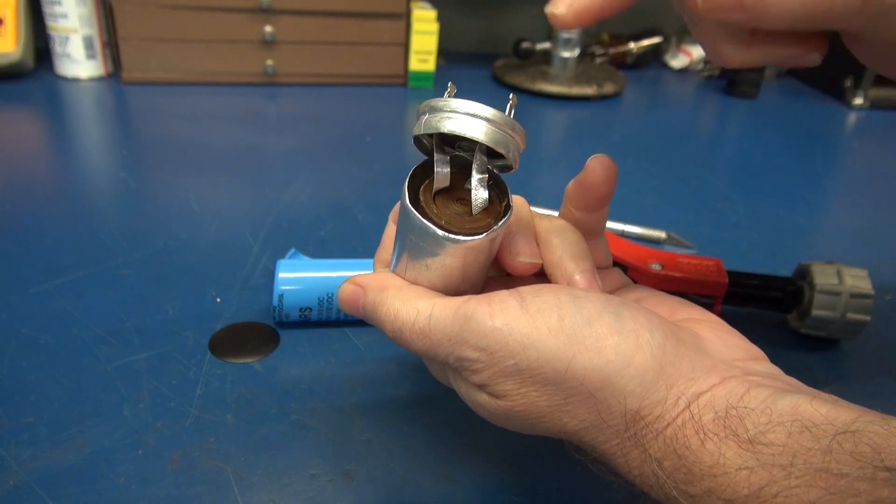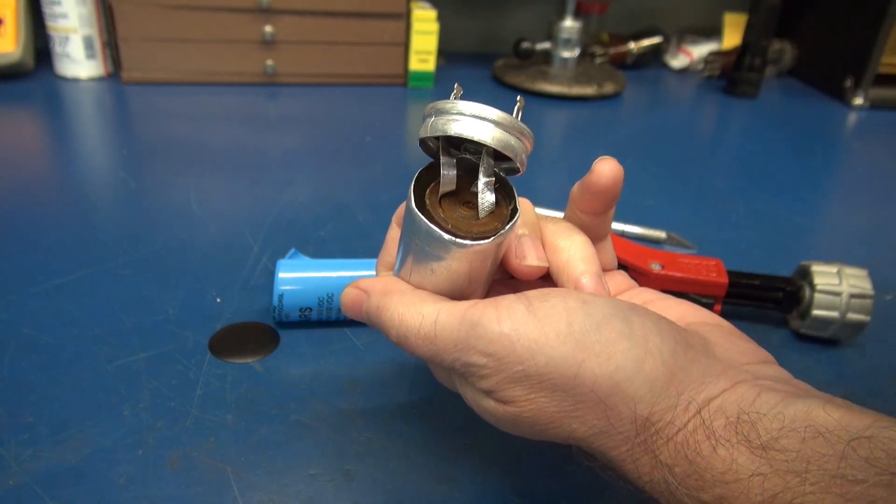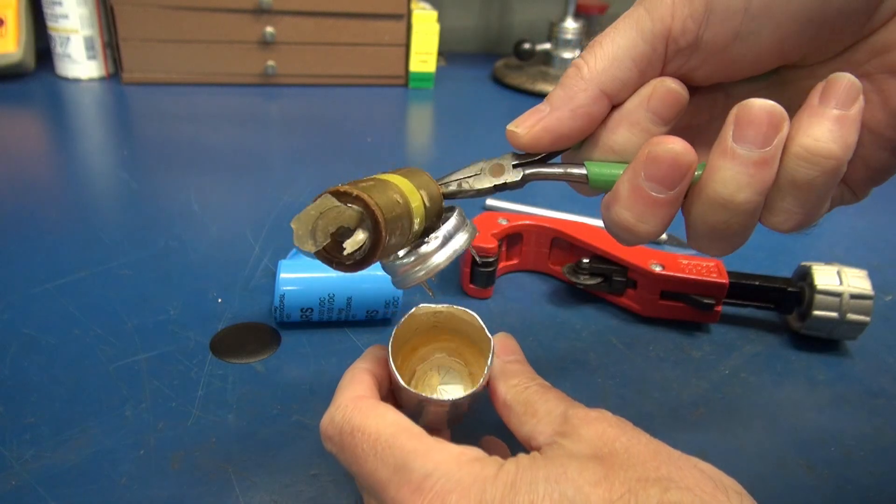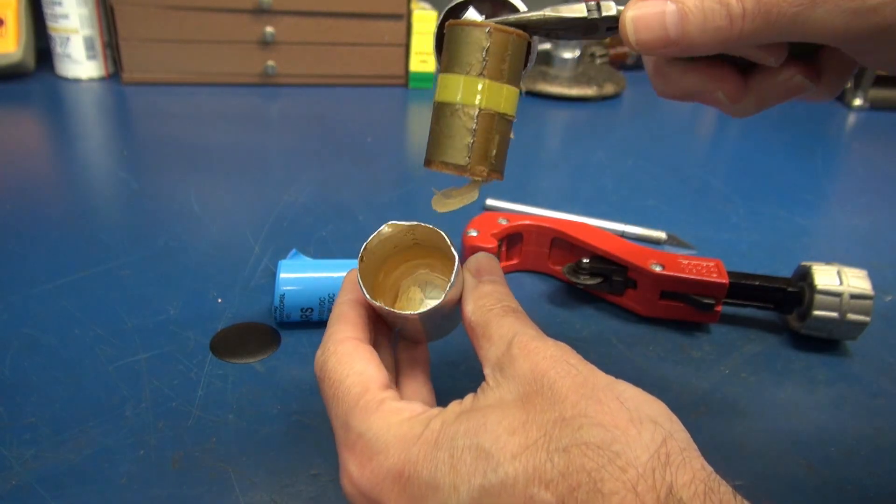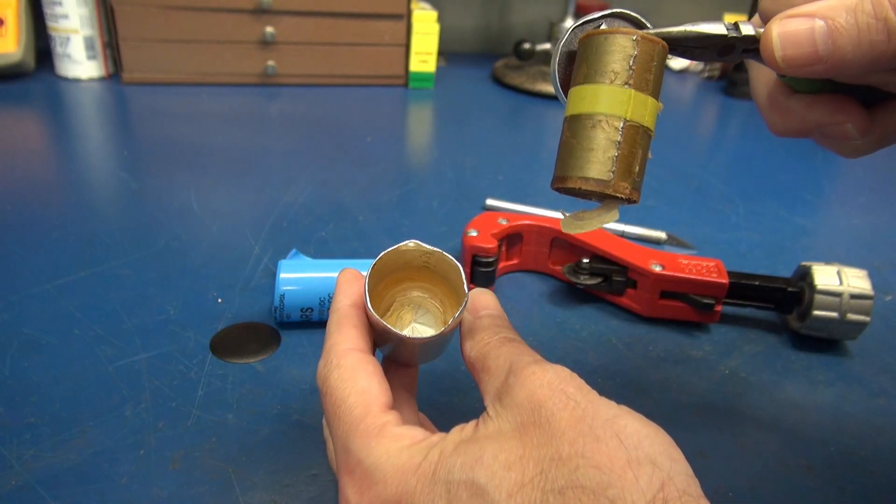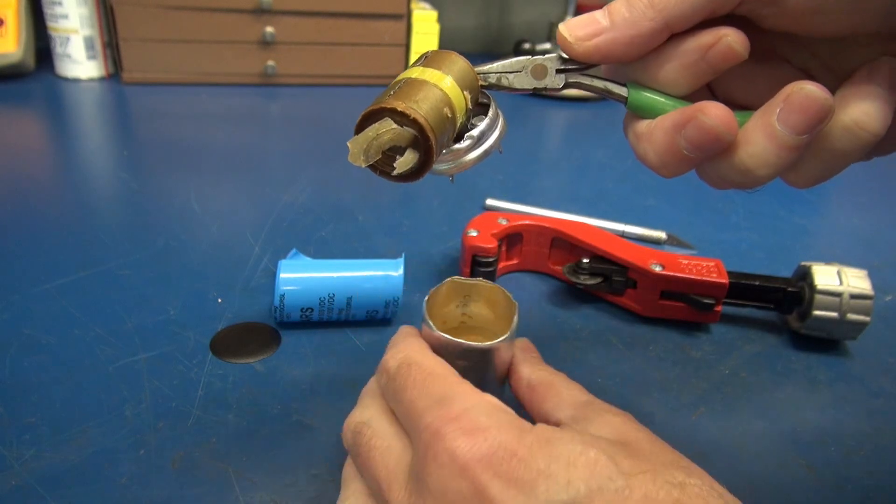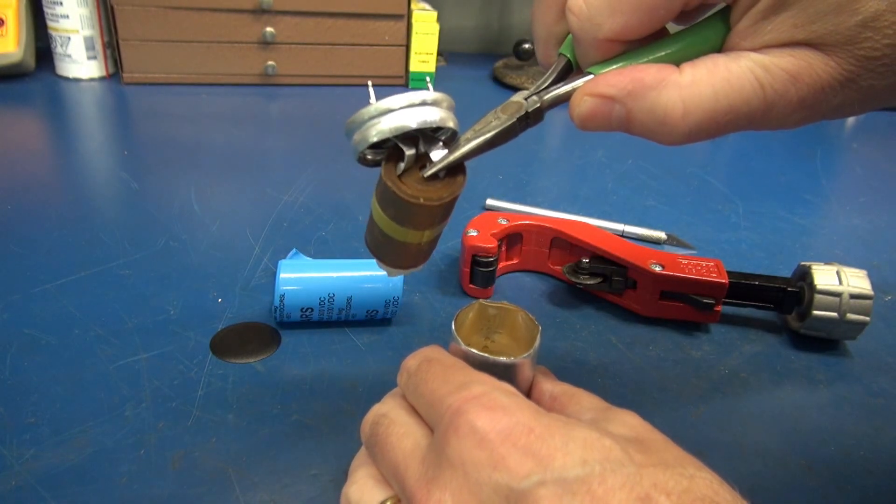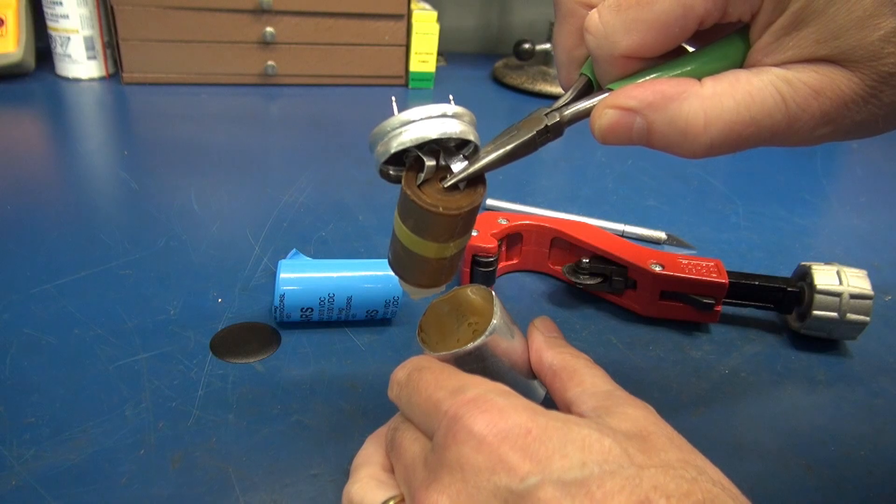I need to get some long nose pliers so I can safely pull the insides out. There we go. Oh, there she is. Well, I'll be. So you can see, it looks like they use some type of wax to retain the capacitor element. I'm very impressed. This is totally unexpected.